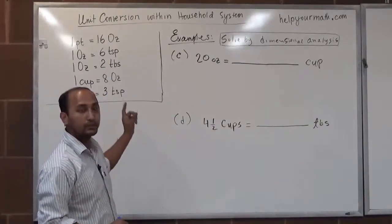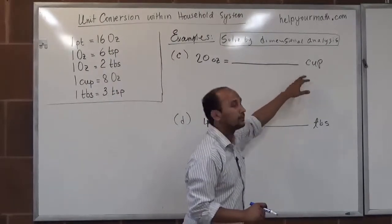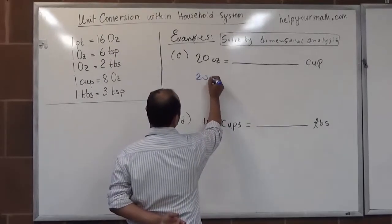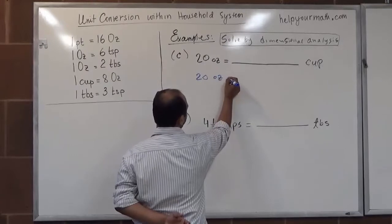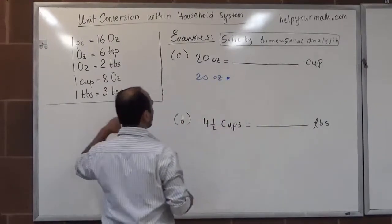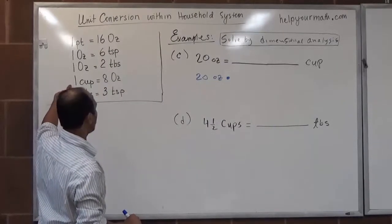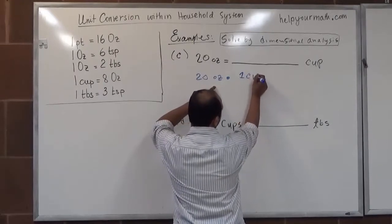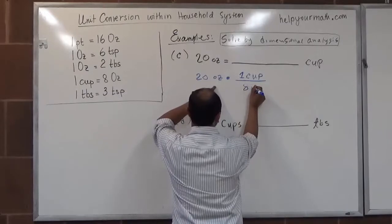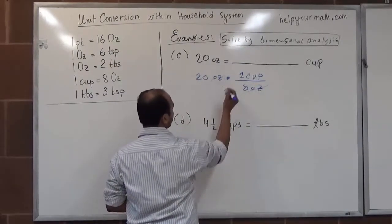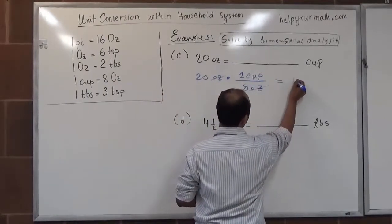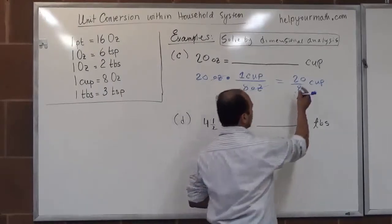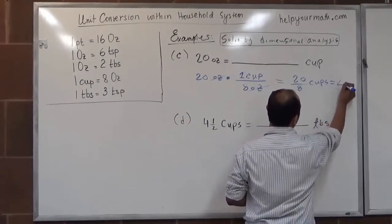Let us continue with problem C, where we have 20 ounces equals how many cups? We are given 20 ounces and we want to convert to cups, so we will multiply by the conversion factor for cups to ounces. We know 1 cup equals 8 ounces, so we want to cancel ounces and write 1 cup over 8 ounces. Ounces cancel, and we have 20 times 1 cup over 8, which simplifies to 2 and a half cups.